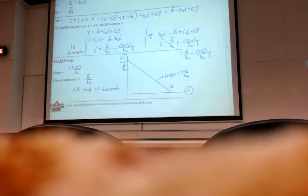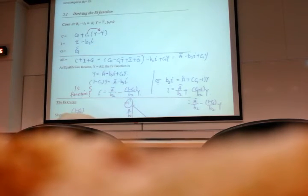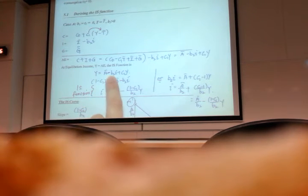So this is the easiest version. But you could see, if you are very systematic, if you are enlisting your C, I, and G, writing out equilibrium income, restructure the equation, you will get it.